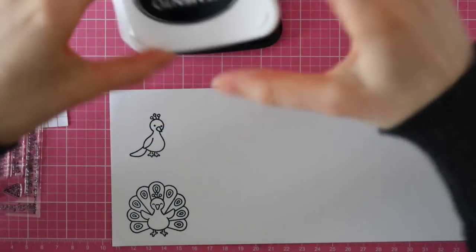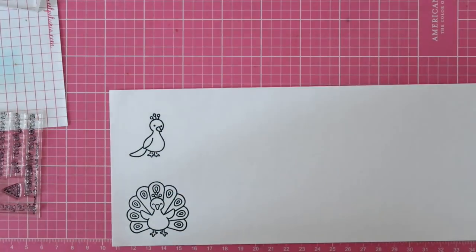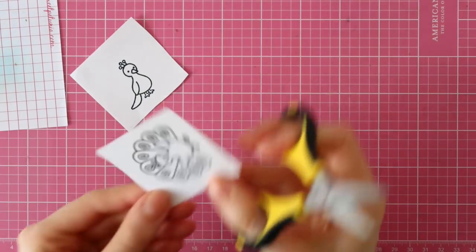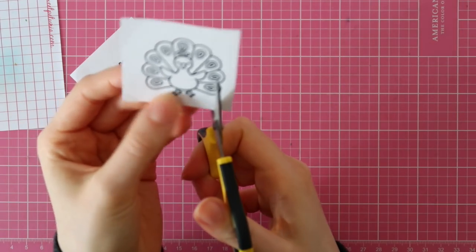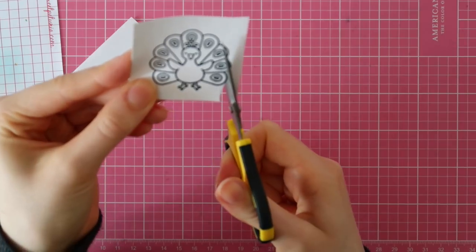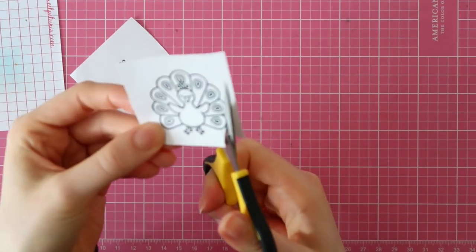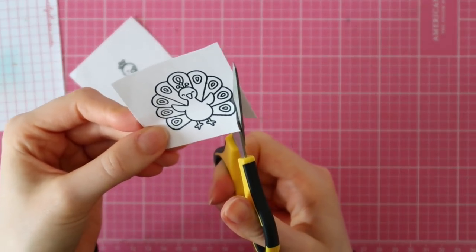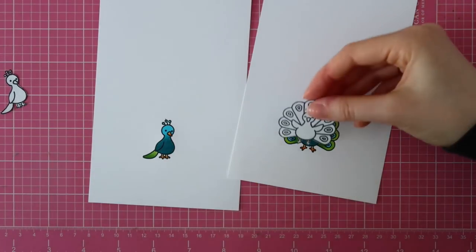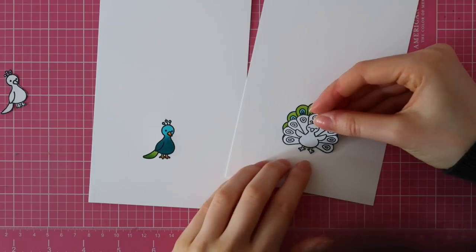Next, I'm stamping the two peacocks on some masking paper from Simon Says Stamp using Memento Tuxedo Black ink, and then I'm using my EK Success Color Bee scissors to cut out these shapes. You can also use a post-it note to create your masks or even printer paper, whatever works best for you and whatever you have in your stash.